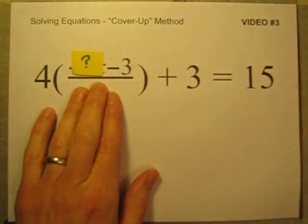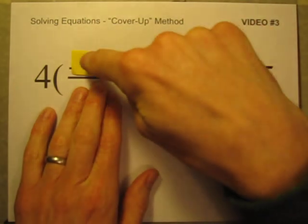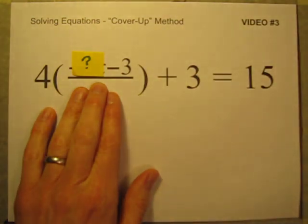What minus 3 is equal to 15? Well, 18 minus 3 is equal to 15. So the chunk I'm covering up right here must be equal to 18. And now I'm to the last step.